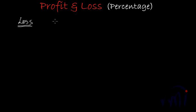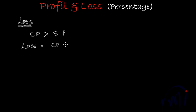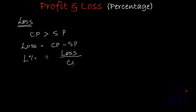When we incur a loss, the cost price (CP) is more than the sale price (SP). The amount of loss = CP − SP. This loss is earned on the cost price, just as profit is earned on the cost price. So loss percent (L%) = (loss / CP) × 100.